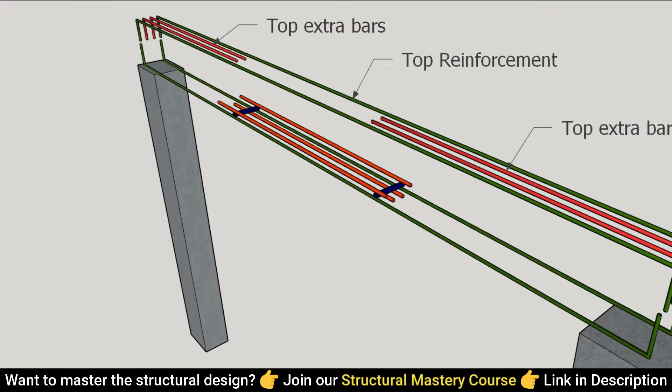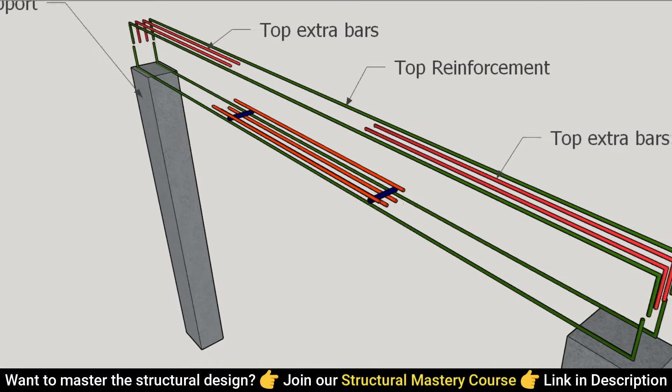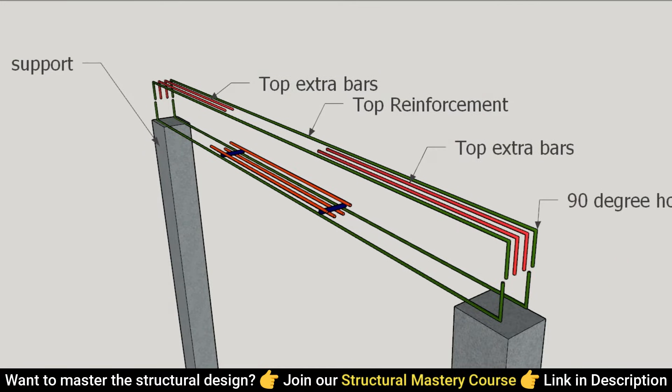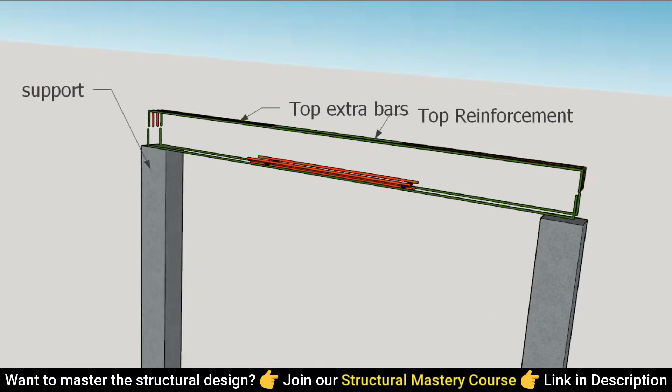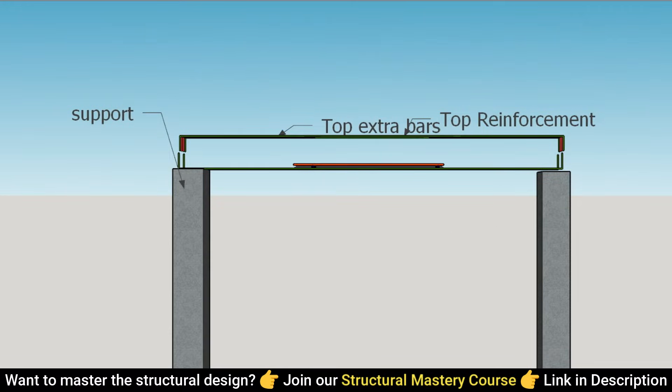Following that, we examine top reinforcement which also extends between columns and incorporates 90-degree hooks for anchoring. Top reinforcement is vital for resisting bending stresses at the beam's support points.